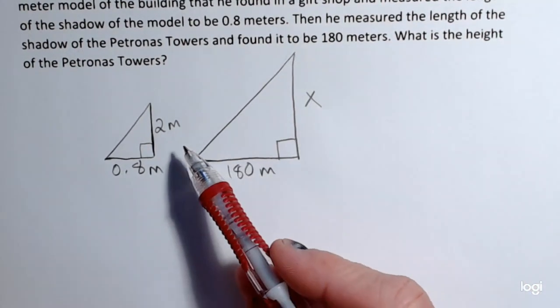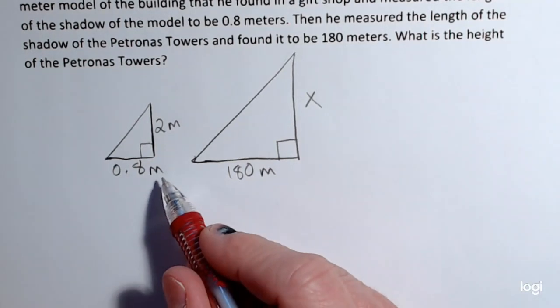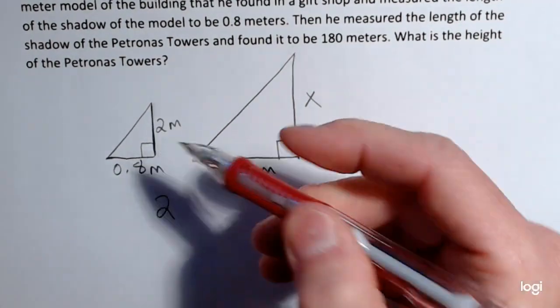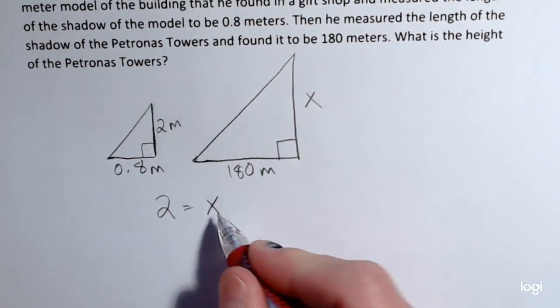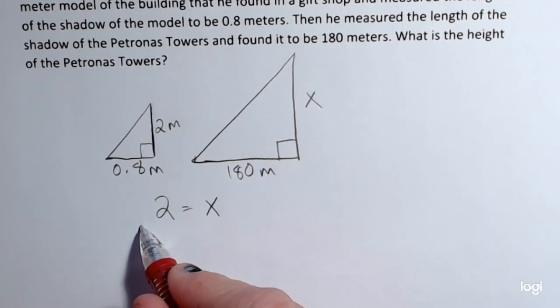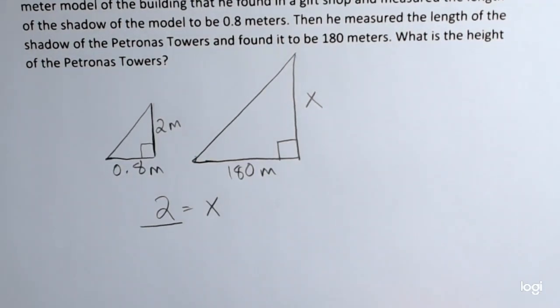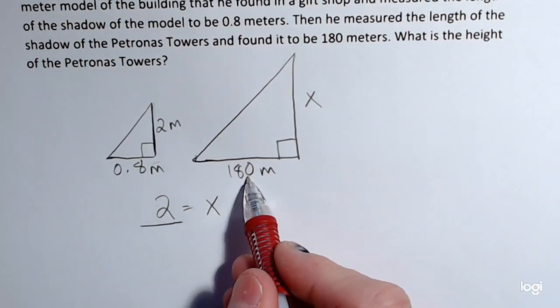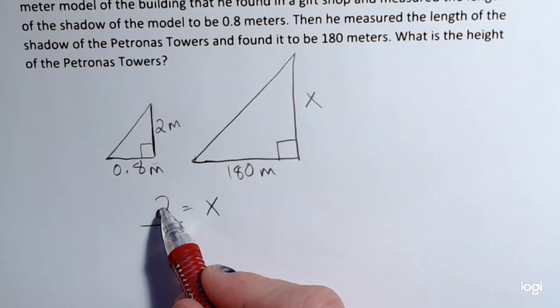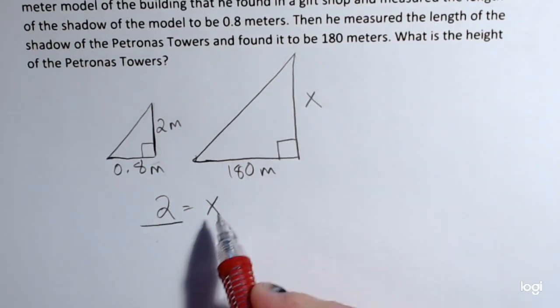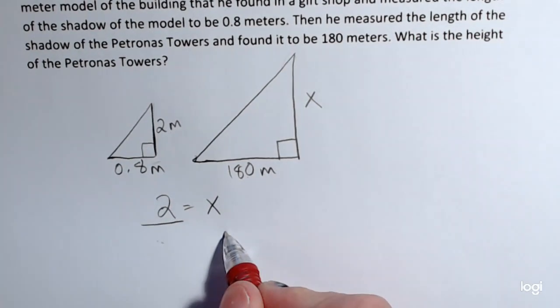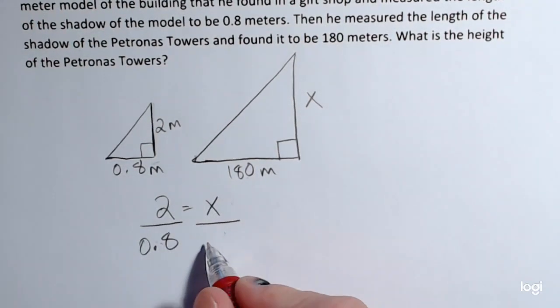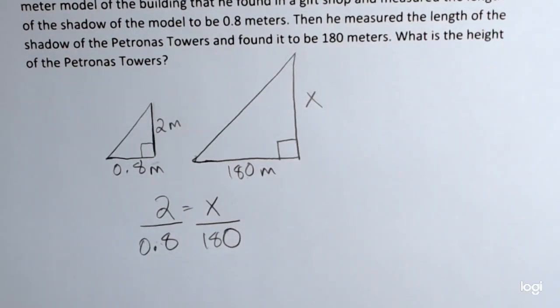So I want to set this up as a proportion and I'm going to put the height in the numerators. And I want to make sure that I put the correct length here. I don't want to put the 180 down here. I'm going smaller to larger, so in my denominator I want smaller to larger. So I'm going to put 0.8 in that denominator and 180 in the second denominator.